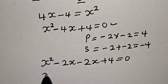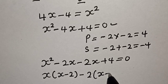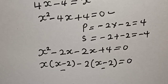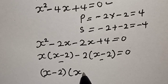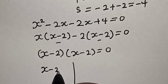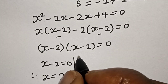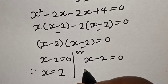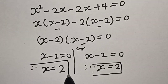Now x is common. We have x into x minus 2, minus 2 into x minus 2, is equal to 0. Now x minus 2 is common in both terms, so this becomes x minus 2 multiplied by x minus 2 is equal to 0. There are two cases here. First case: x minus 2 is equal to 0, therefore x is equal to 2. Second case: x minus 2 is equal to 0, therefore x is equal to 2. So x equals 2 is our final answer.